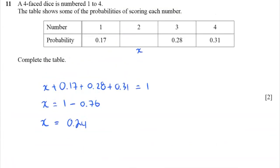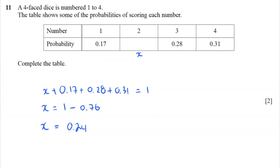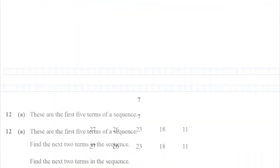Let's just grab a calculator. 0.17 plus 0.28 plus 0.31 is 0.76. And so x is equal to 1 minus 0.76, which is 0.24. Hey, that's the answer. And do we have to put it anywhere? Actually we should write it in the table. 0.24. And we're showing some working out. So that's great.